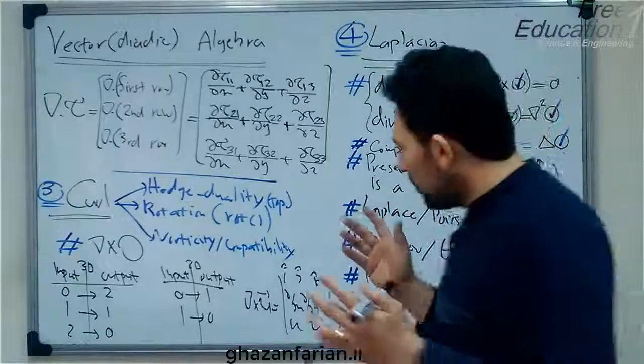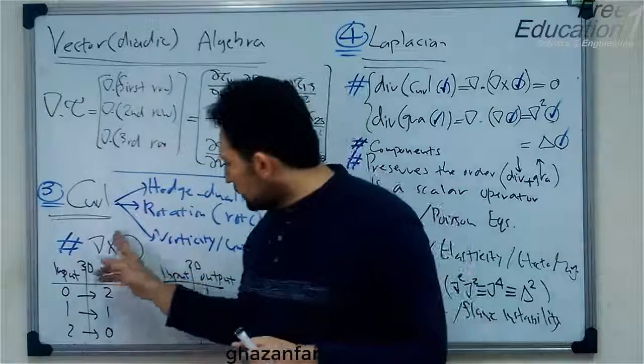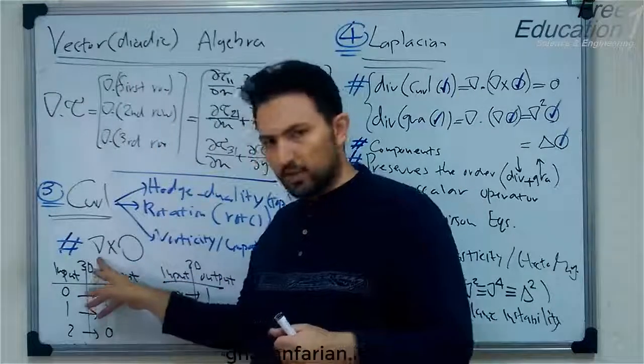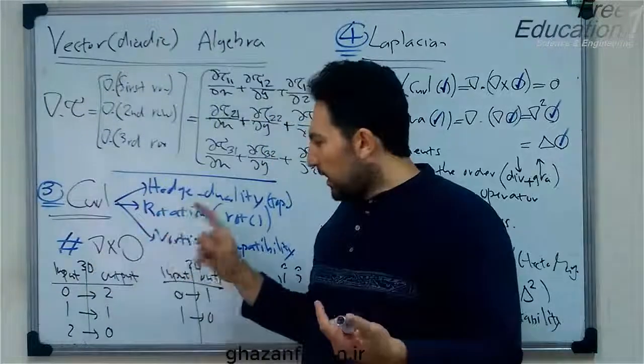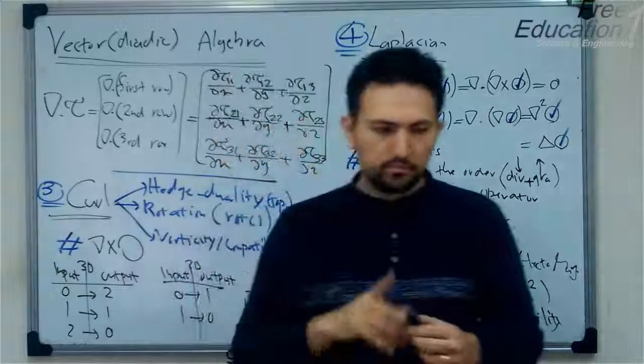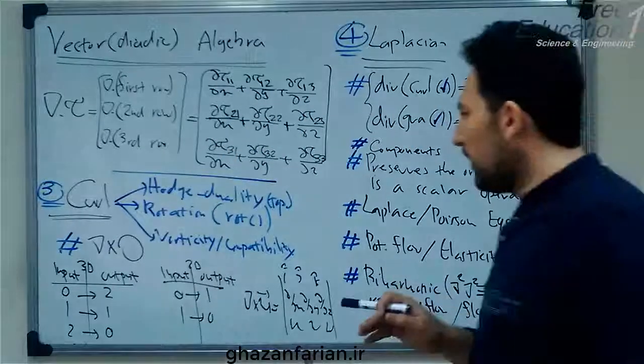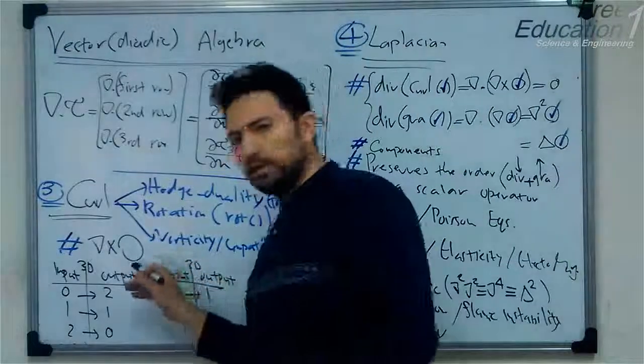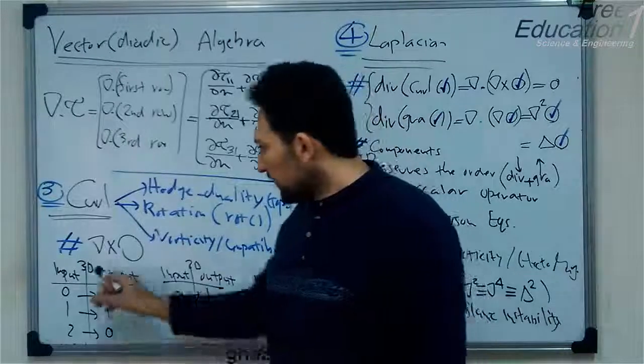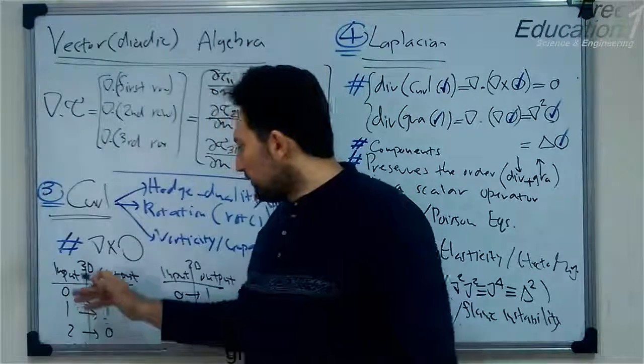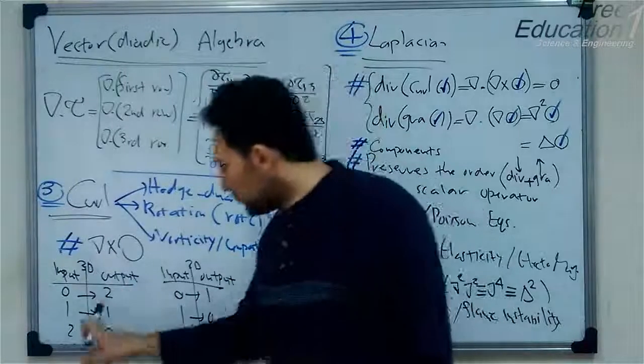Now, we show the curl operator in Gibbs notation as the cross product of the del operator and something. It's important to know that the curl operator can be applied to a scalar or a vector or a tensor. Generally speaking, in three-dimensional space, the maximum order of input of the curl operator is 2.